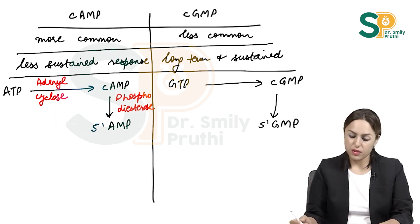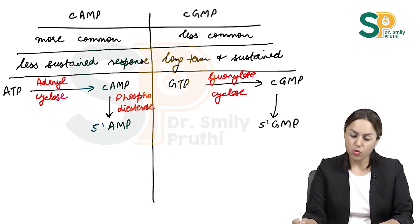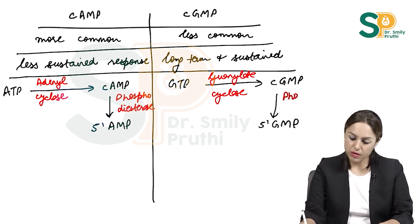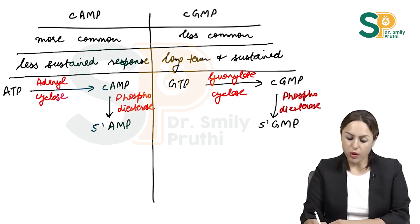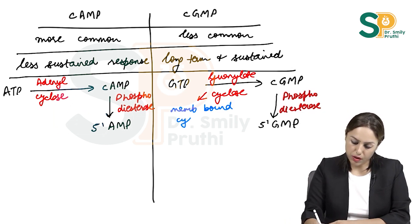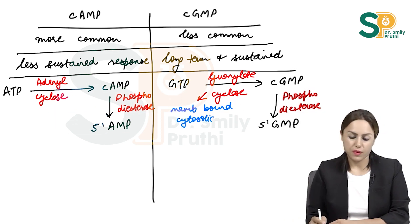The enzyme for cyclic GMP formation is guanylate cyclase, and the same enzyme phosphodiesterase is responsible for its destruction. Guanylate cyclase has two forms: a membrane-bound form and a cytosolic form.